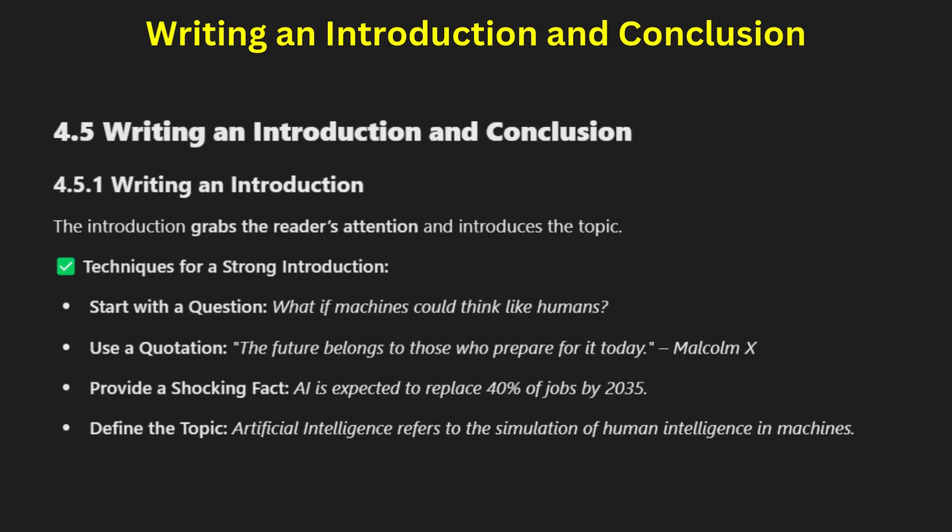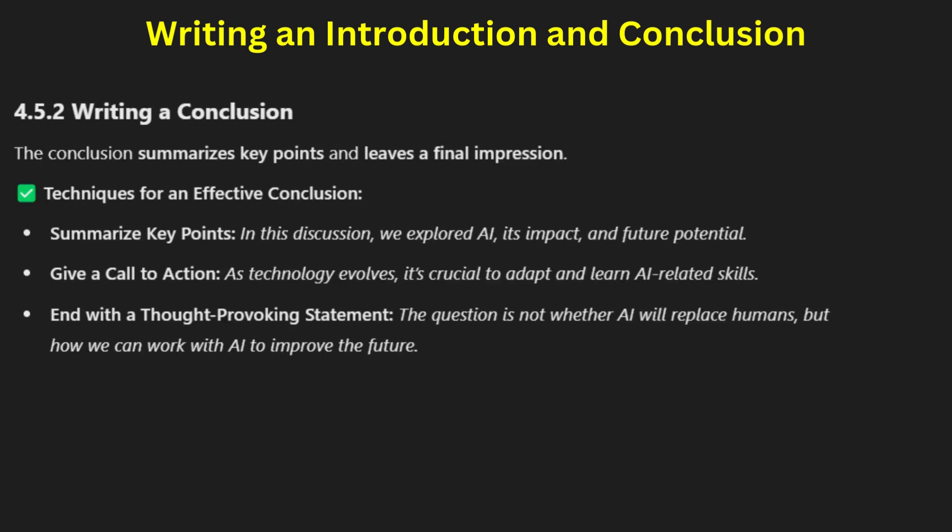Writing an introduction and conclusion: an introduction sets the stage for the discussion. A good introduction includes three key elements — a hook, which is an engaging opening statement; background information; and a thesis statement, which is the main point of the writing. For example, an essay on AI could start with 'Will AI replace human jobs?' before introducing the key points.